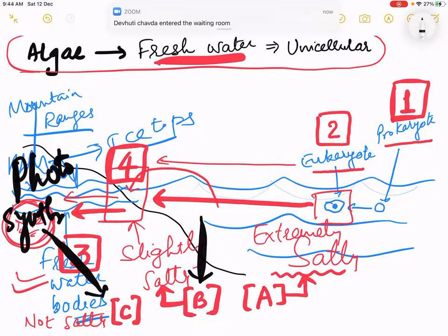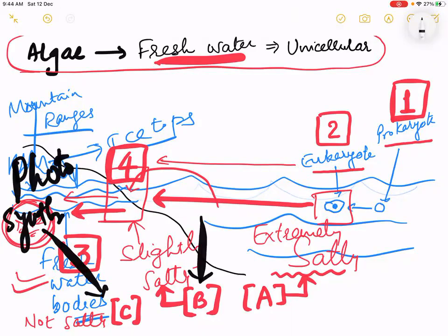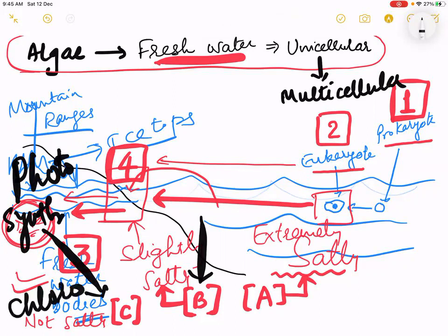So they need to grow by their length — understand this point. They need to grow more, so unicellular turned into multicellular to increase the height. So slightly salty water has a different type of algae. The algae found in part C is green-colored algae called Chlorophyceae. Part B has another kind of algae which is not green in color because they have different types of photosynthetic pigment — not only chlorophyll but more than chlorophyll — so they are brown in color. These are commonly known as Phaeophyceae.